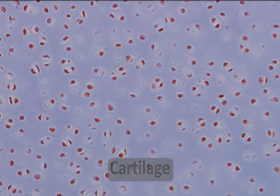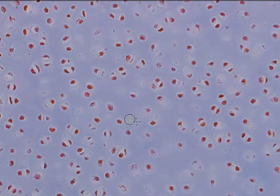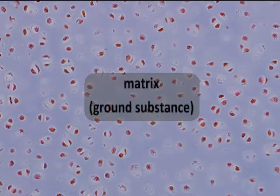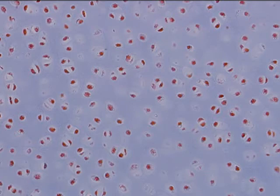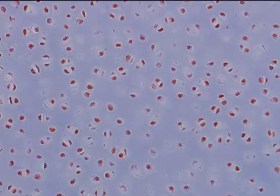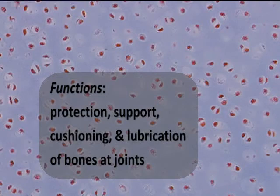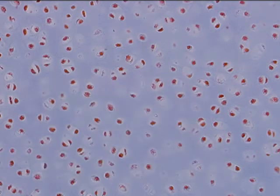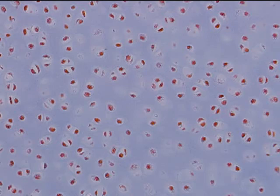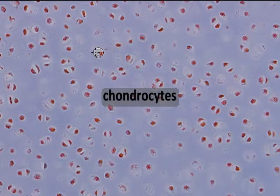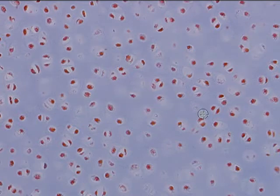This is hyaline cartilage and like other connective tissues we see cells embedded within a matrix or ground substance that includes acellular components like protein, water, salts, acids, etc. Hyaline cartilage is the main joint cartilage, offering protection, support, cushioning, and lubrication, providing a very friction-free surface for the ends of the long bones to move against in the joint. This cartilage has a thicker jelly-like matrix — that's the bluish-whitish regions here.